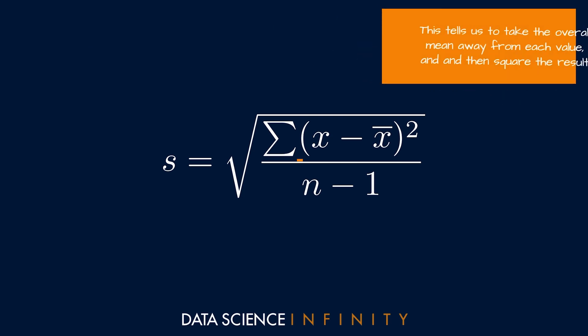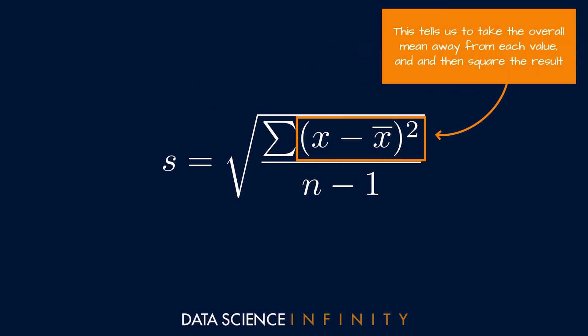So this part here tells us to take the overall mean for the set, and this is denoted by the x with the line on top of it, to take that overall mean away from each individual value in the set, and then to square the result. Now we will run through an actual example of this step by step in a moment.